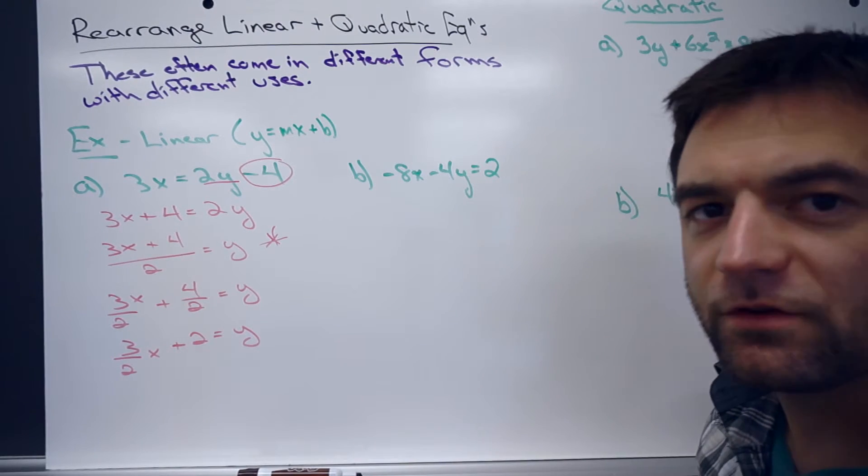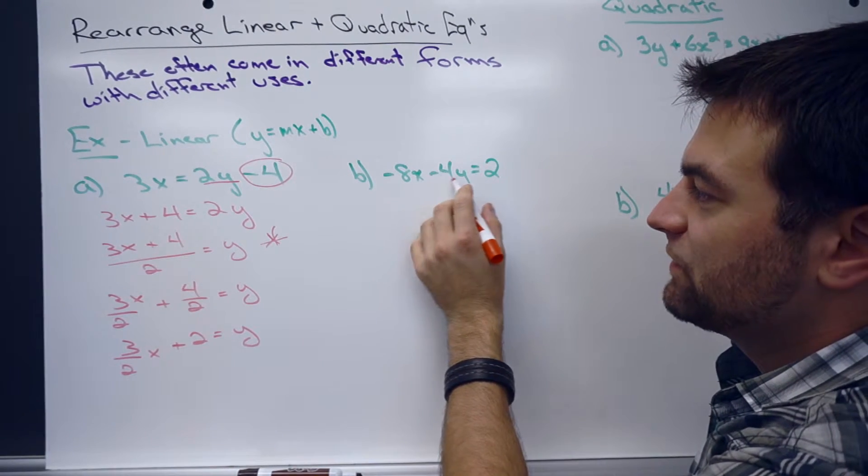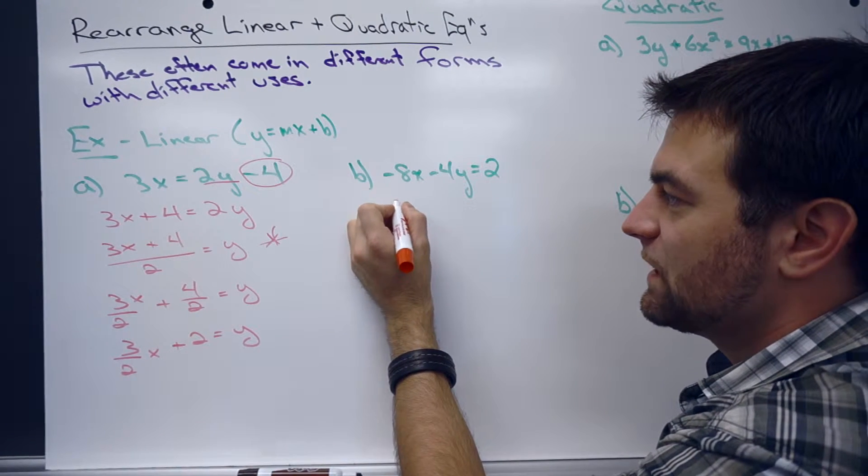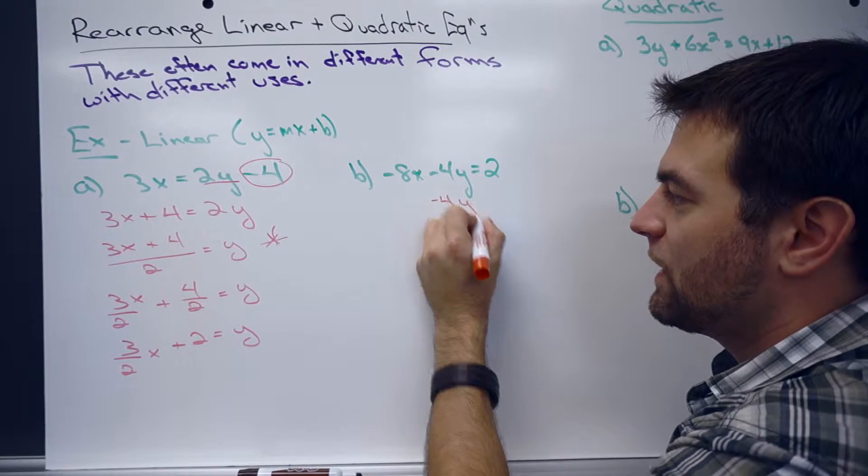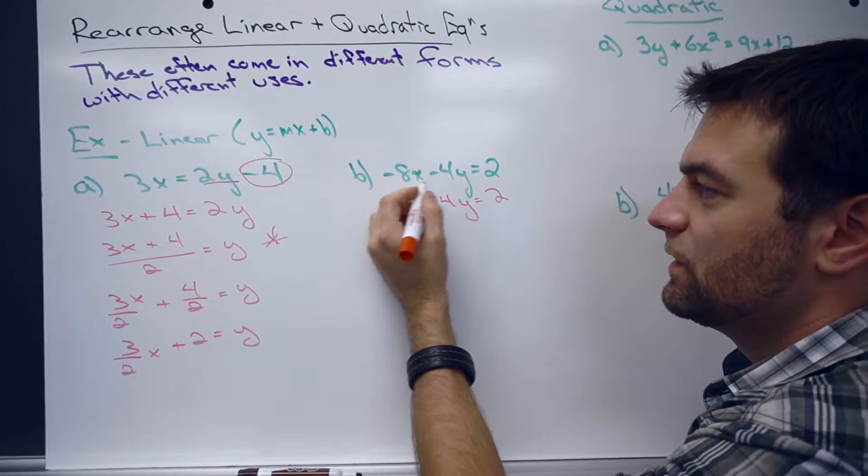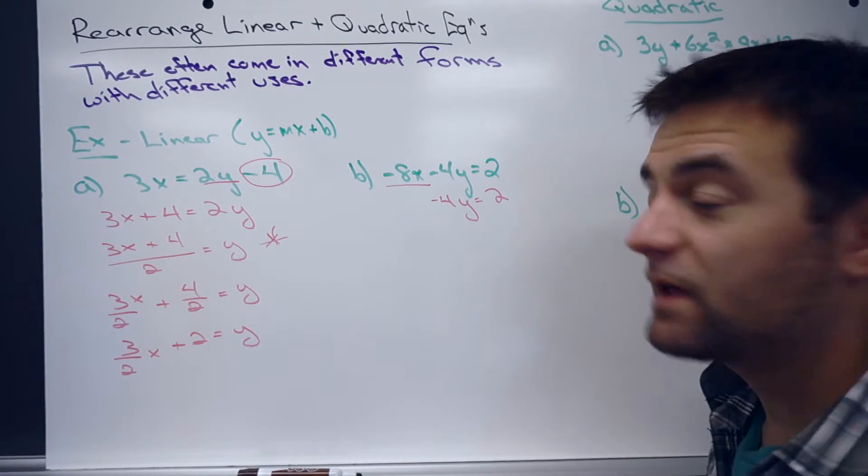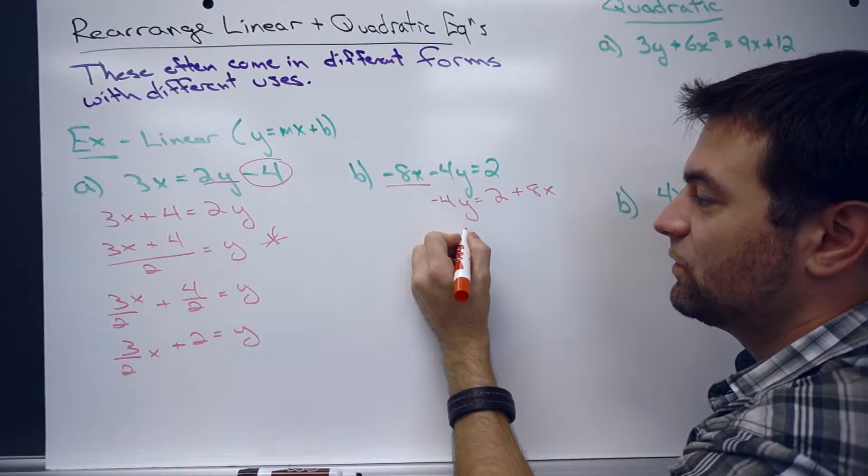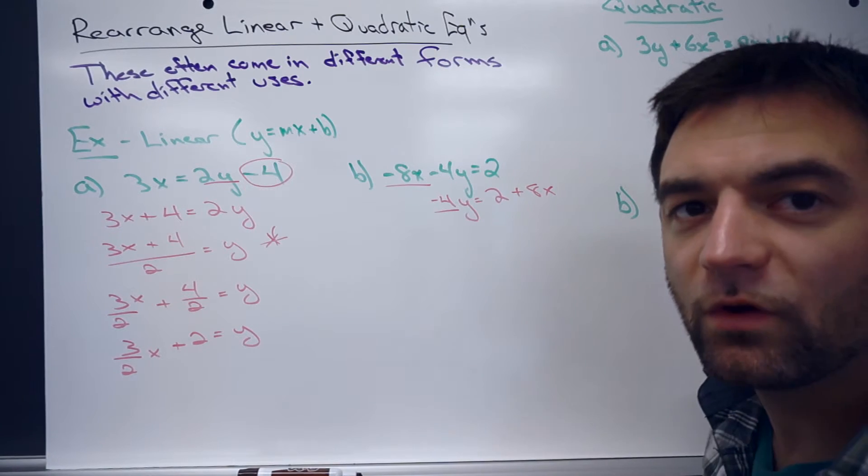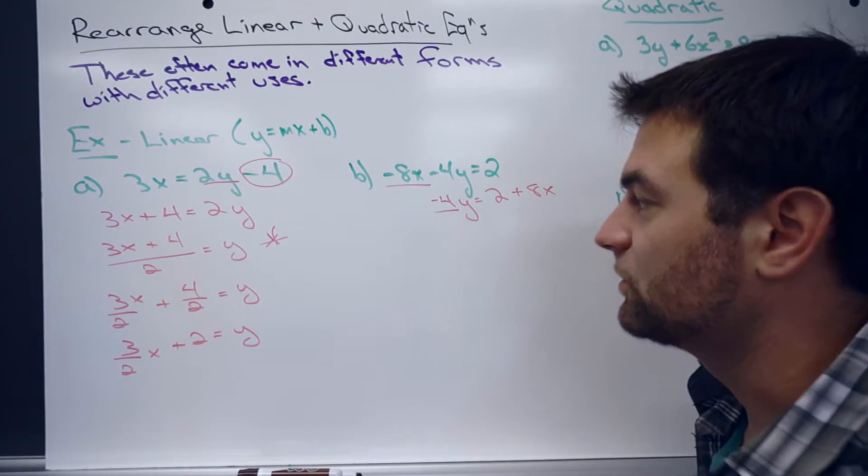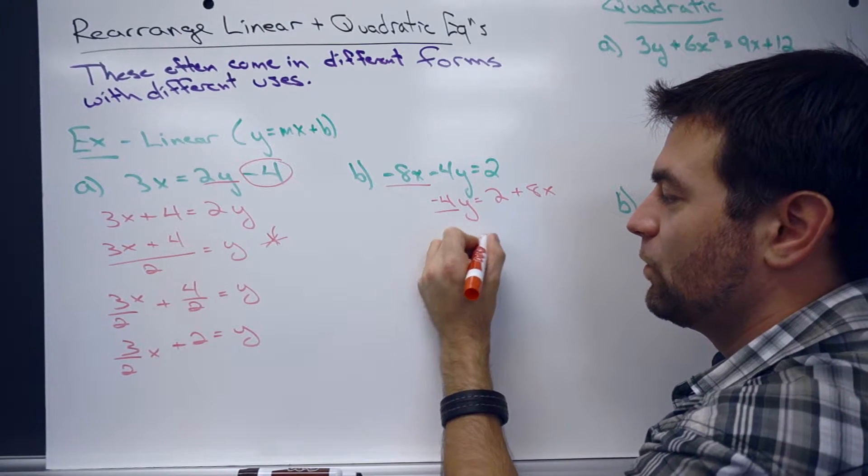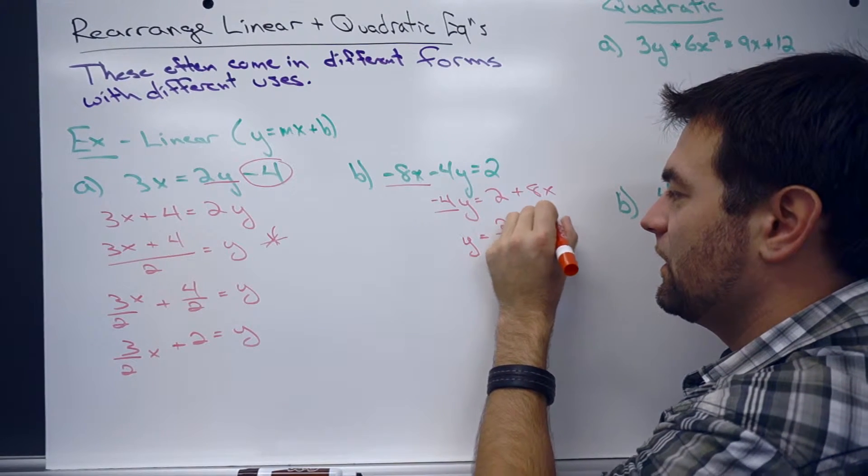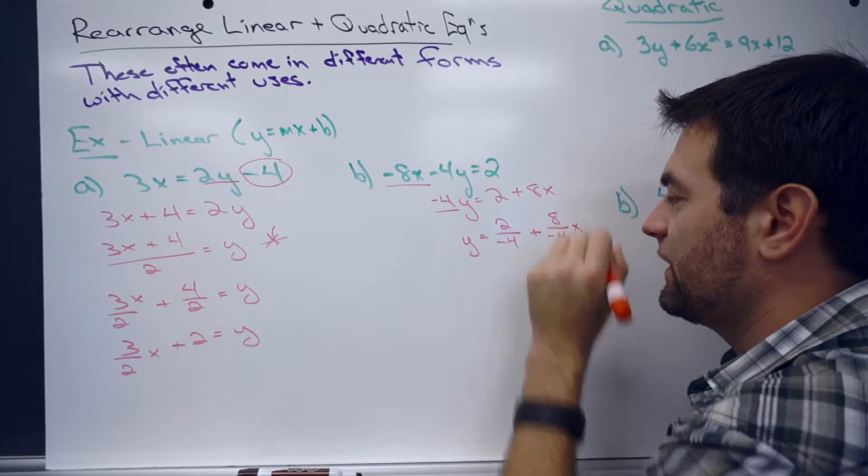We'll take a look at another example here. I have negative 8x minus 4y equals 2. So we're getting the y by itself. So we have negative 4y equals 2. And moving that negative 8x over, it's 2 plus 8x. And then we'll divide by the negative 4 here as it's being multiplied by the y. y equals 2 over negative 4 plus 8 over negative 4x.